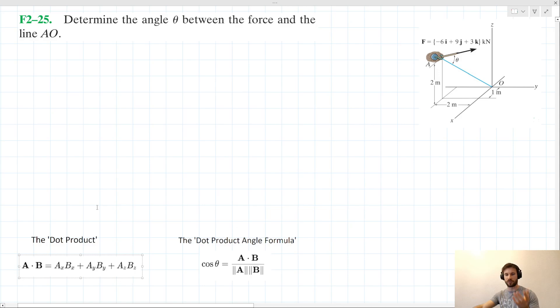First is this idea of the dot product, where the dot product is the sum of the respective products of the x, y, and z components of the two vectors that you're finding the dot product of. And the second concept here is this dot product angle formula, where we can say that the cos of the angle between two vectors is equal to its dot product over the product of their magnitudes.